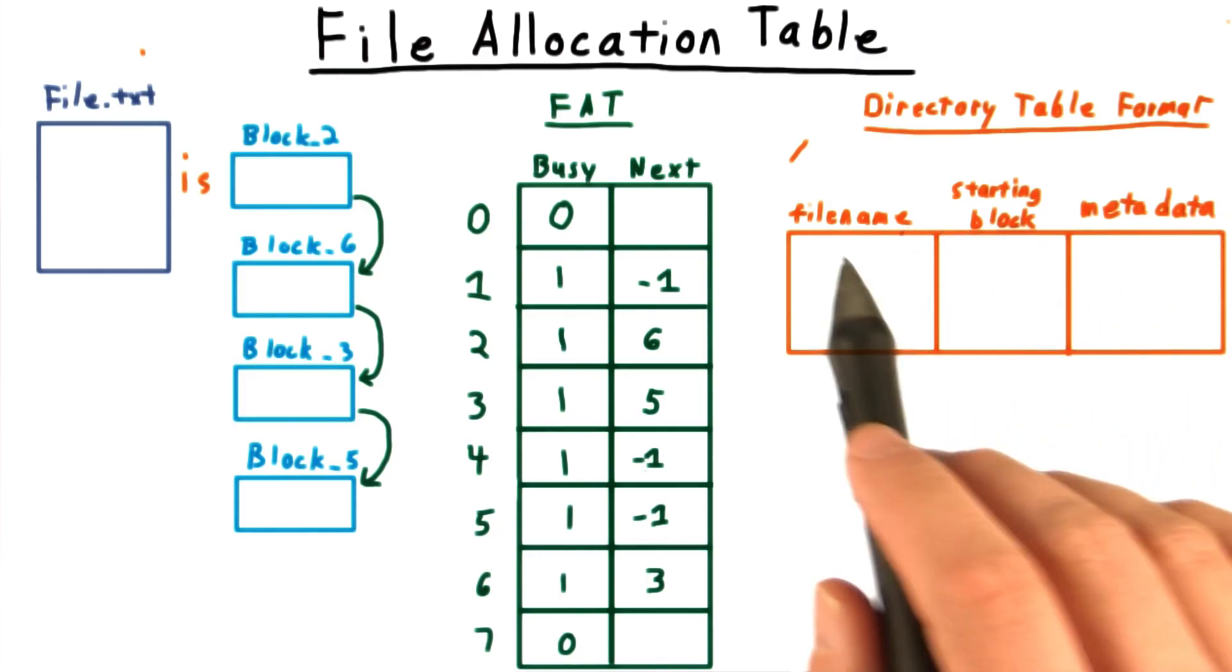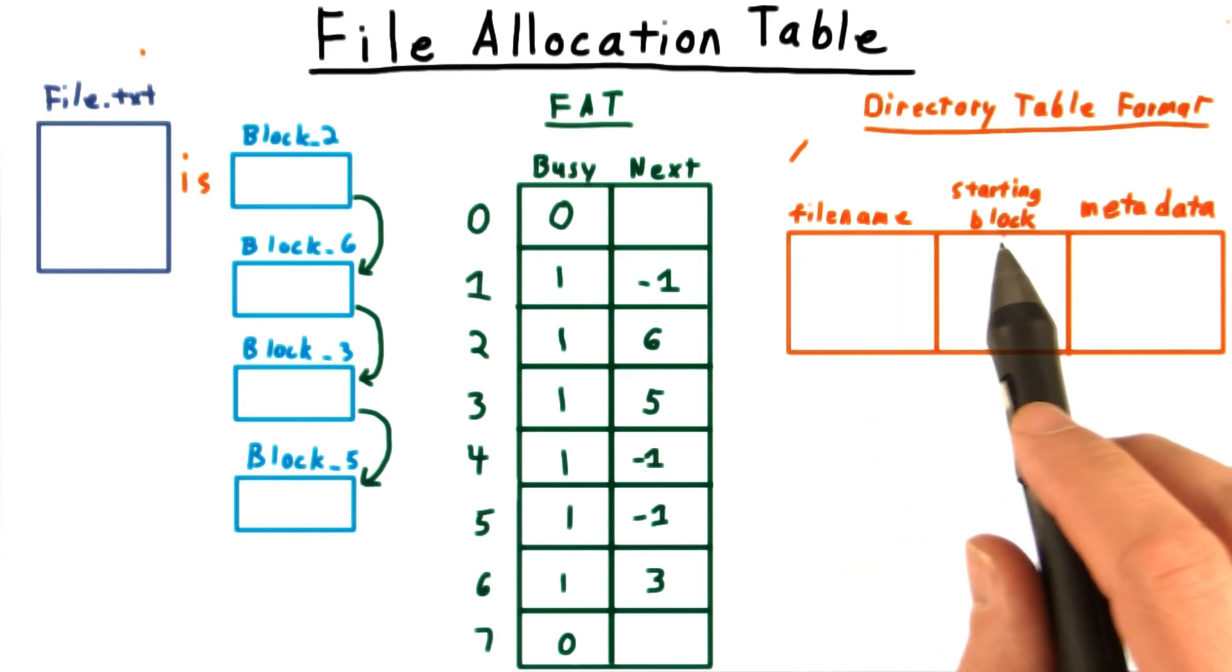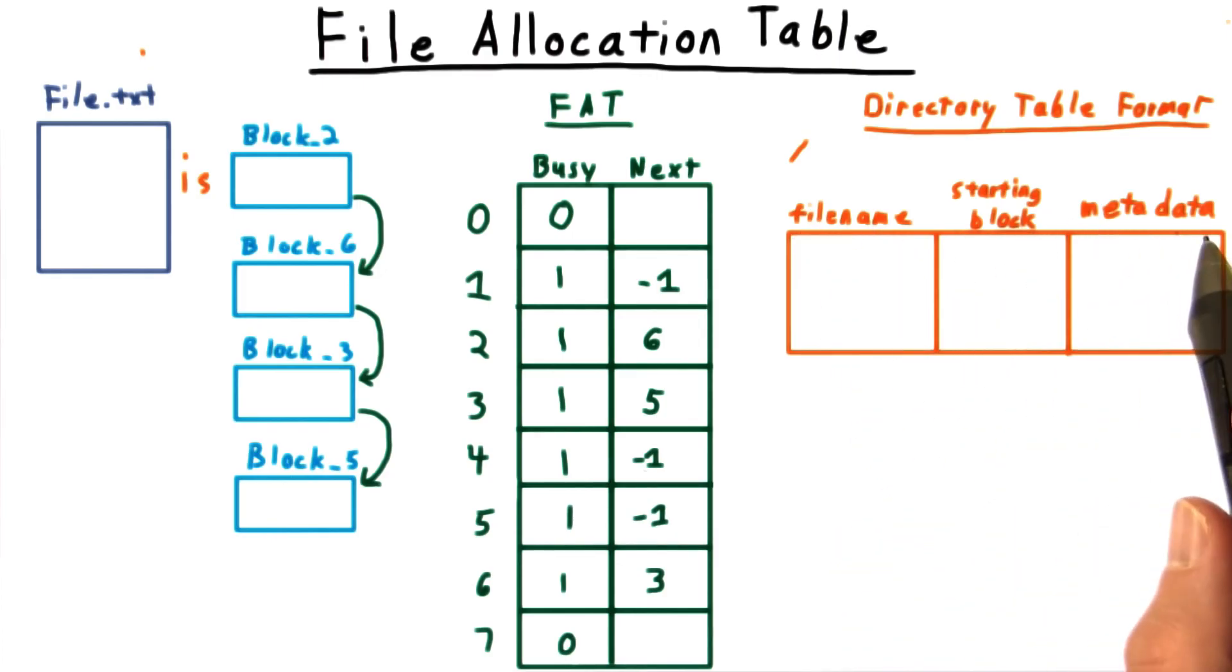Entries in the table all have the same width and contain the essential information, including the file name, the starting block, and any other metadata associated with the file, such as permissions.